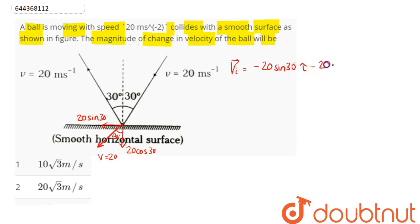Sin 30 is 1 by 2, hence this is minus 10 i cap and minus 10 root 3 j cap.